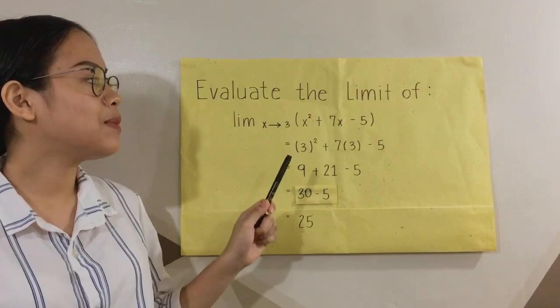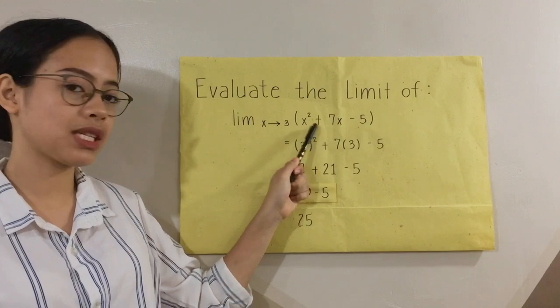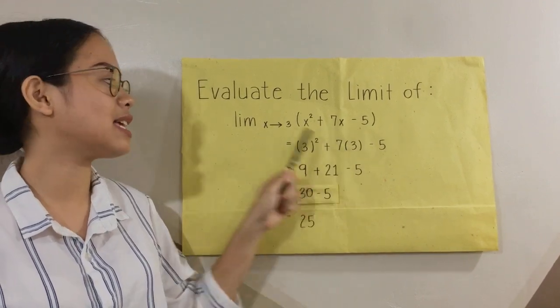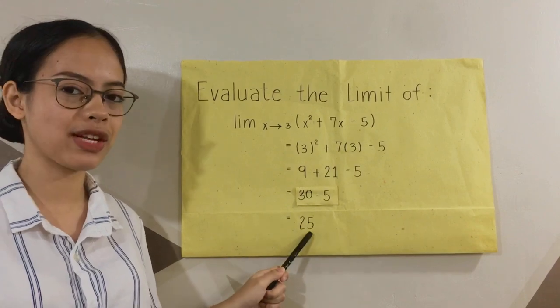Therefore, the limit of x squared plus 7x minus 5 as x approaches 3 is 25.